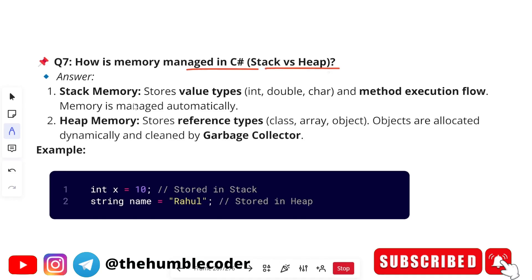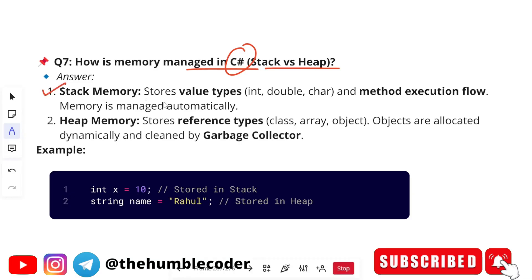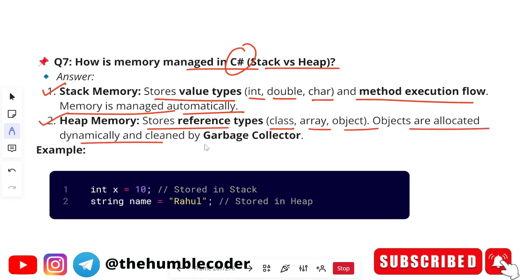The next question was: 'How is memory managed in C# — stack versus heap?' Stack memory stores value types like integer, double, and character, and manages method execution flow automatically. Heap memory stores reference types like classes, arrays, and objects — these are allocated dynamically and cleaned by the garbage collector. These are general concepts just framed around C#. If you want more detail, search for these topics and prepare your own answers; these sample answers work well at the last moment.